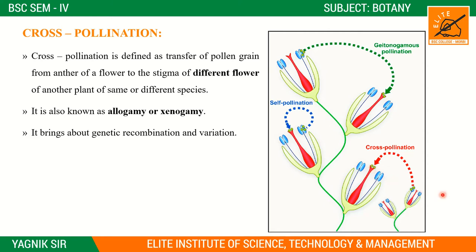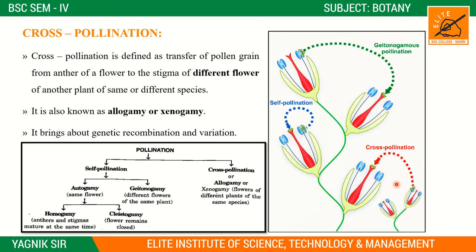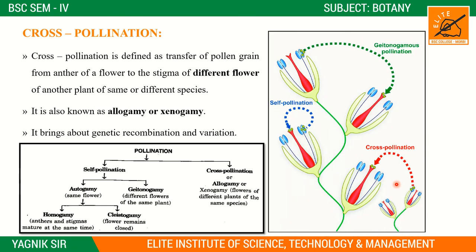Cross pollination is also known as allogamy or xenogamy. It brings about genetic recombination and variation. In cross pollination, characteristics of different flowers may vary, resulting in variation — unlike self pollination where variation is minimal.